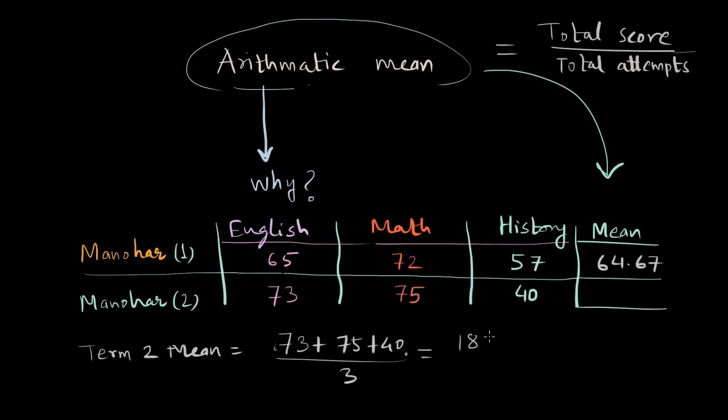It appeared as if Manohar was improving because he improved in English and in math as well, so for two subjects he did improve. But overall his performance actually dipped and this comes out to be 62.67. In fact his performance dipped in term two. That's what the marks suggest here.